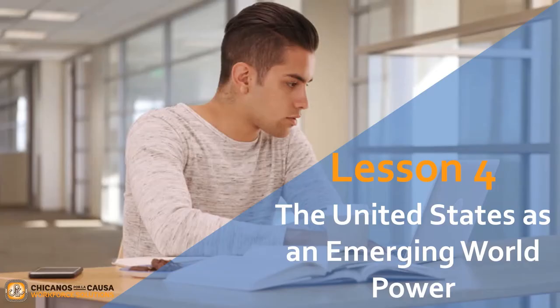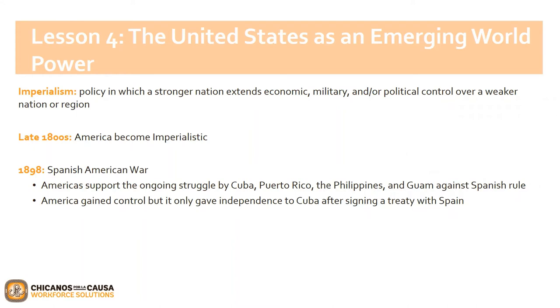We are now moving on to lesson 4: The United States as an Emerging World Power. As the United States' population grew, they also wanted to grow the nation's economy. Businesses and government leaders wanted more natural resources and wanted to expand trade to Africa, Asia, and Latin America. In order to achieve their goals, they became imperialistic. The European nations had been engaging in imperialism for a long time, and the United States joined in the late 1800s. A little after, the United States fought in the Spanish-American War.